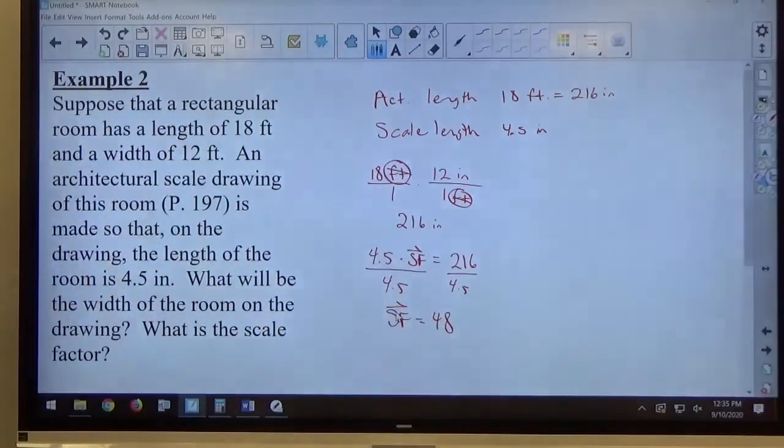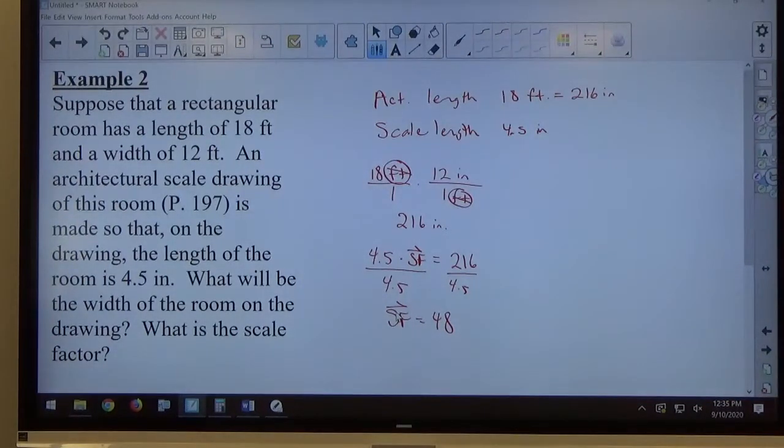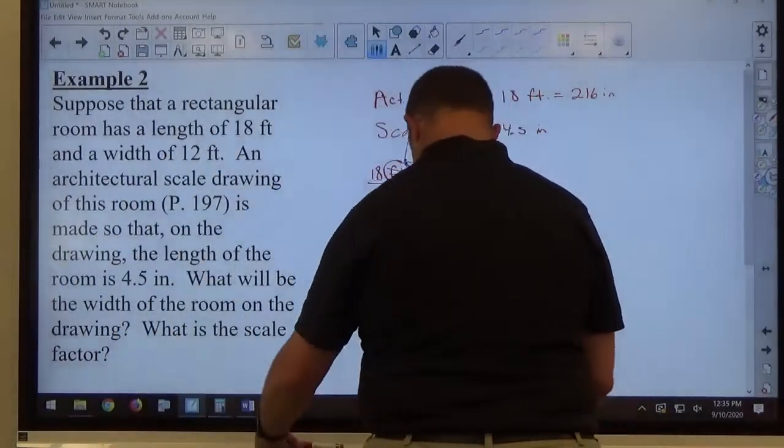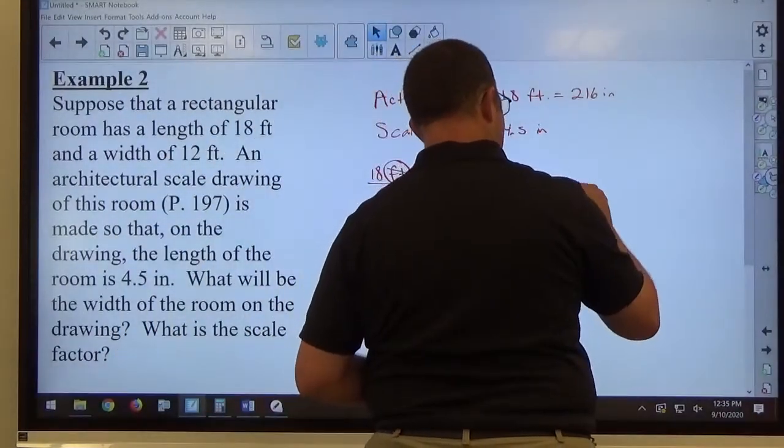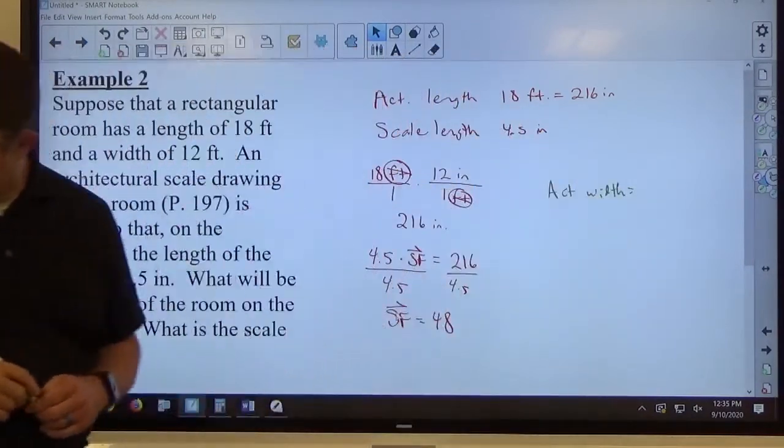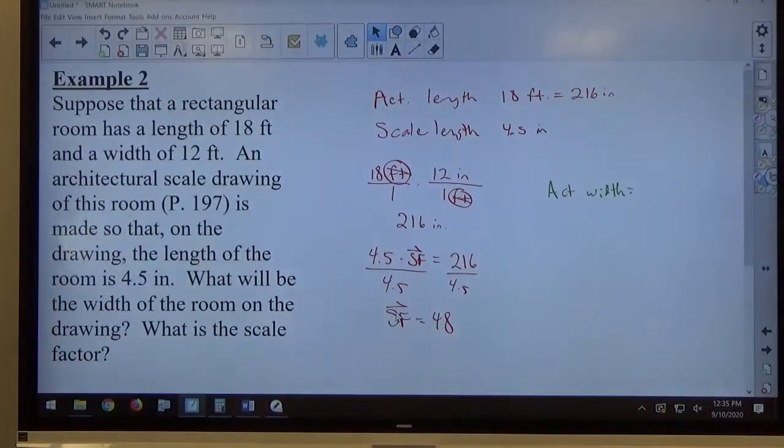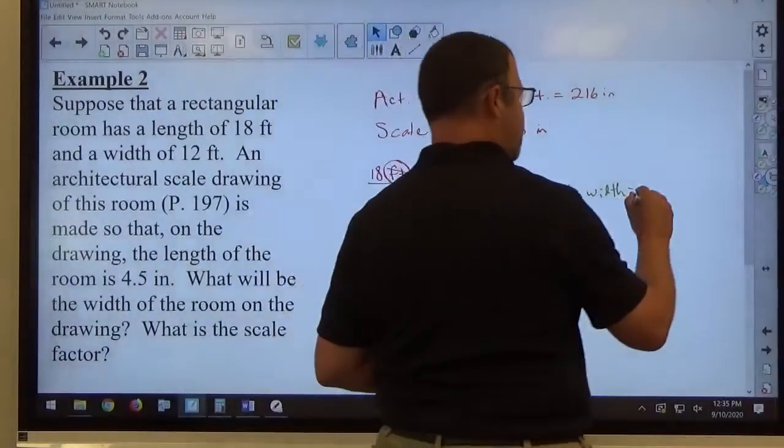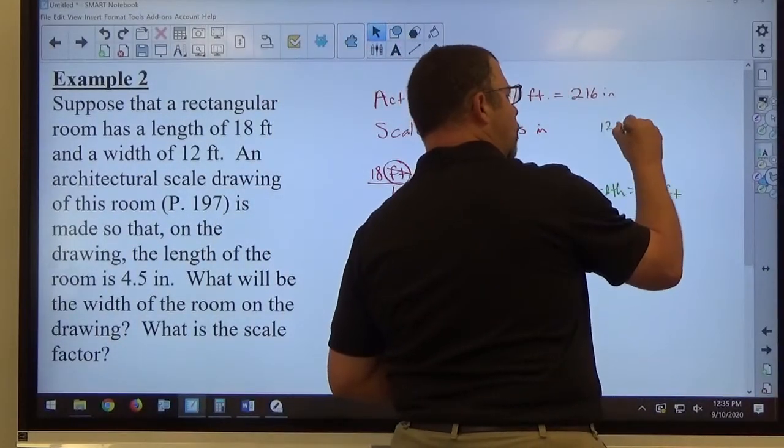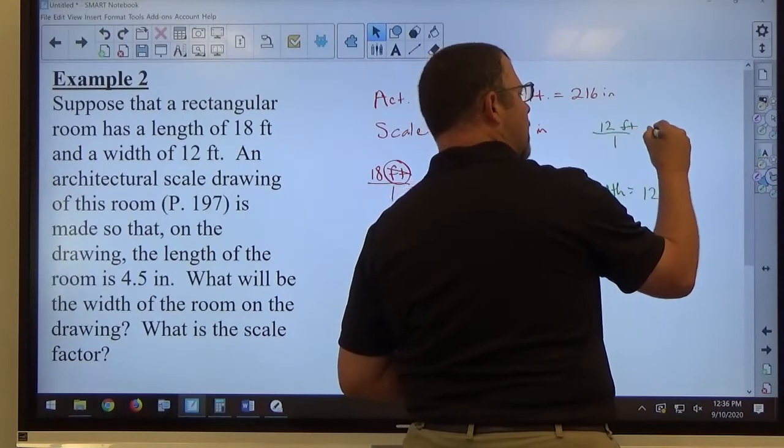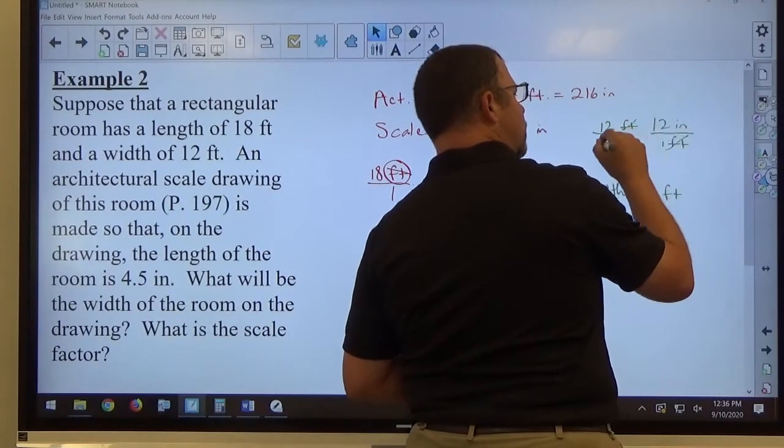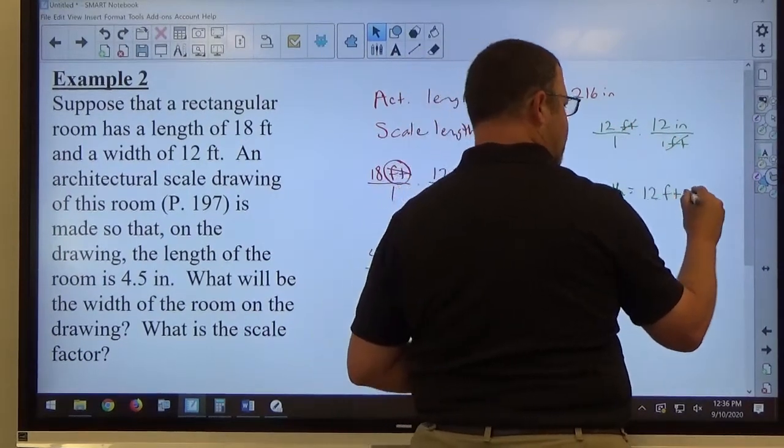Okay, so now, if we look at what we've got going on here, we have the actual width versus the drawing width. The actual width is 12 feet. And if I do my 12 feet over 1, multiply that by 12 inches per 1 foot, 12 times 12 is 144, so that's 144 inches.